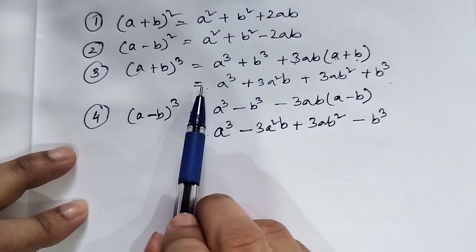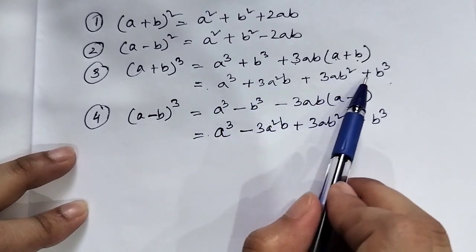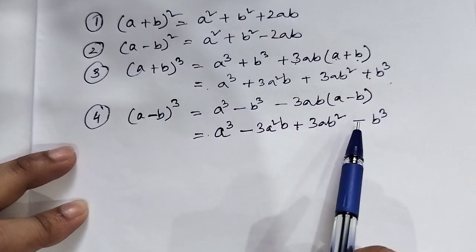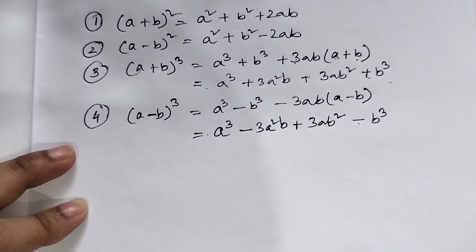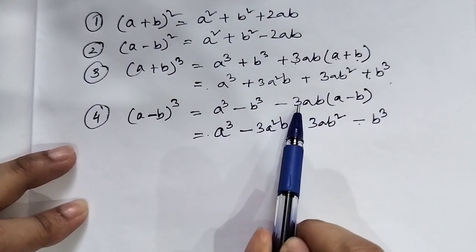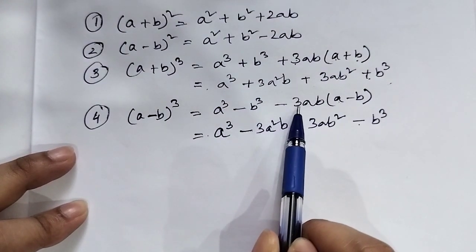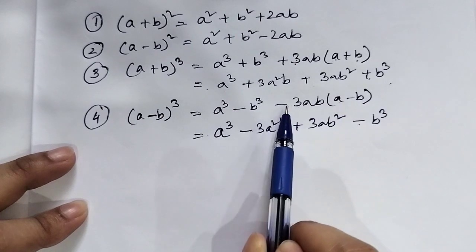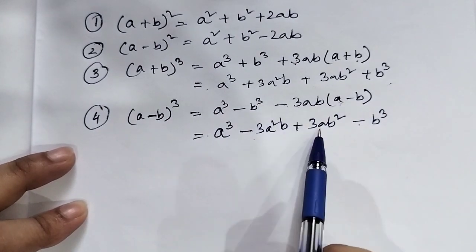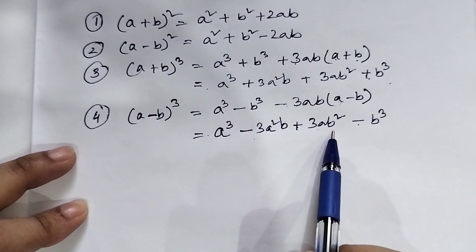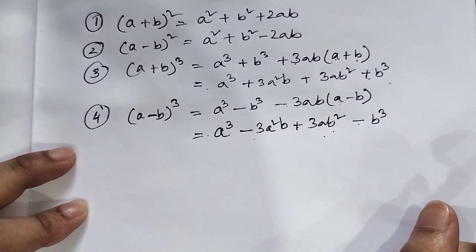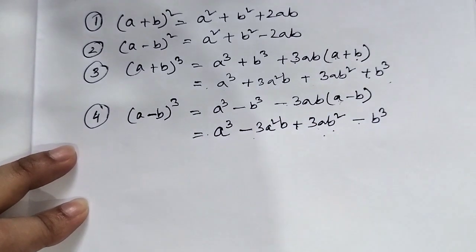Remember the plus or minus signs carefully. The formula alternates: plus, minus, plus, minus. So 3ab square with the correct sign gives us the complete (a minus b) cube expansion.